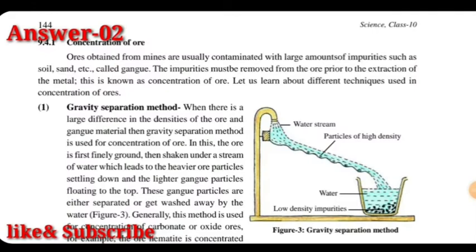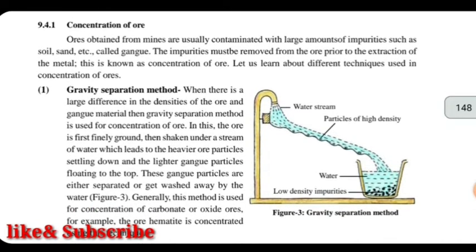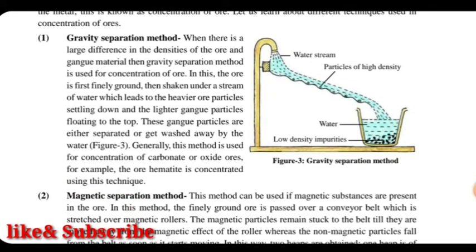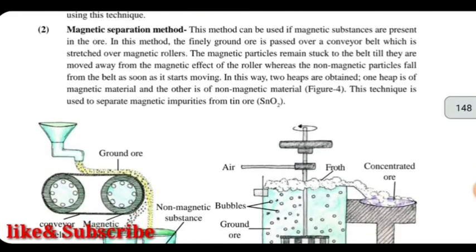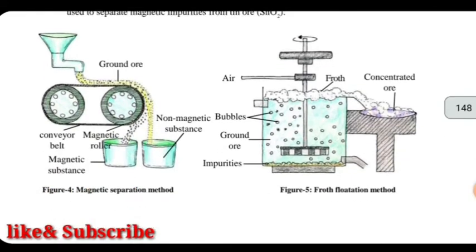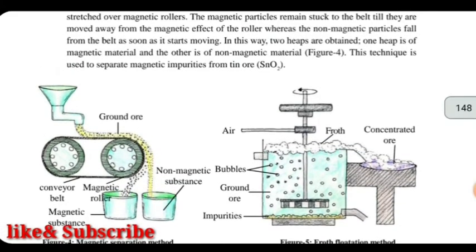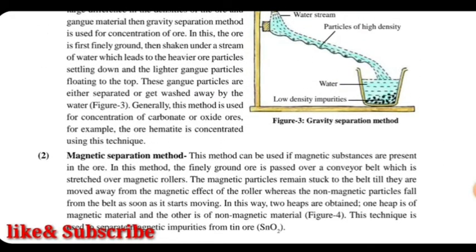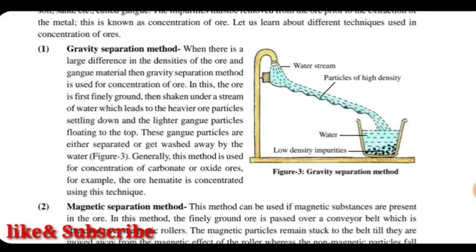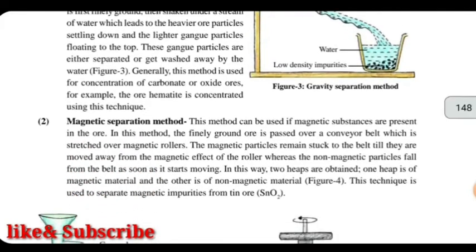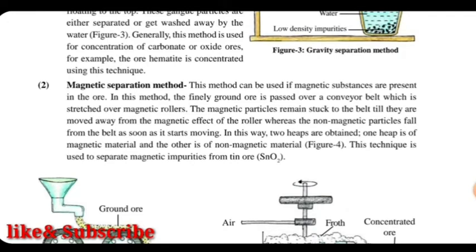For question number 2 we have to explain any two methods of concentration of ore. The first method is gravity separation method — we write the answer and draw the corresponding figure (figure number 3). The second method is magnetic separation method — we write the answer and draw figure number 4. This question carries 4 marks: 2 marks for gravity separation and 2 marks for magnetic separation, so writing this answer should earn you full marks.